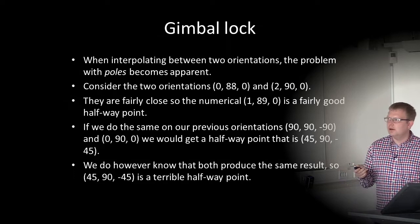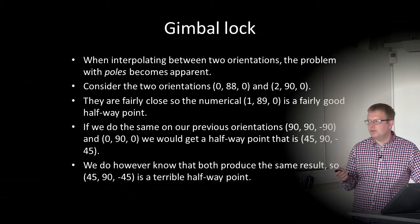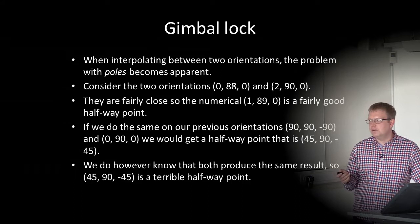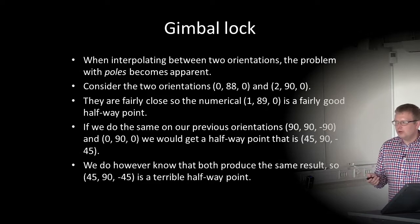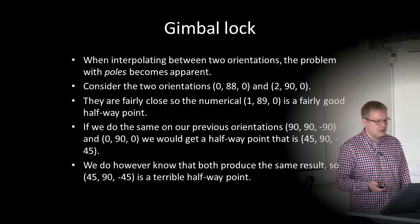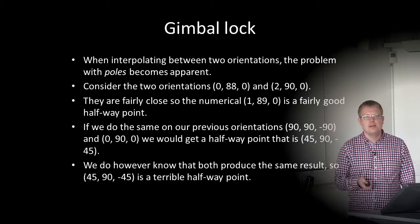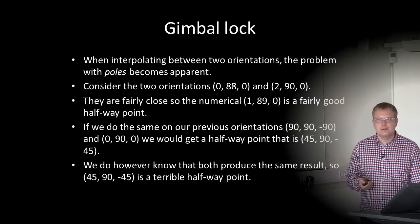Consider the two orientations (0, 88, 0) and (2, 90, 0) — they are fairly close, so the numerical halfway point (1, 89, 0) is a fairly good result. But if we do the same on our previous orientations (90, 90, -90) and (0, 90, 0), we get a halfway point of (45, 90, -45). We know that both produce the same result, so (45, 90, -45) is in fact a very terrible halfway point. Linear interpolation between two orientations can produce very weird results due to the poles — this is called the gimbal lock problem.